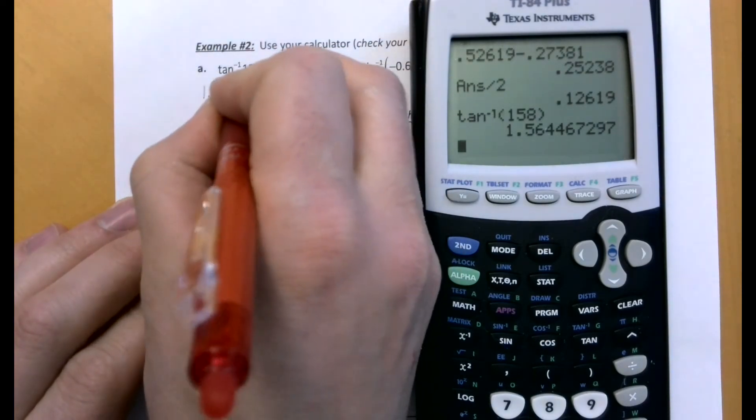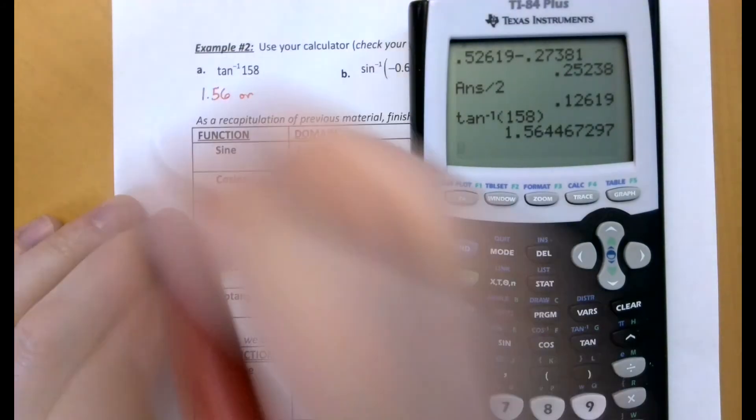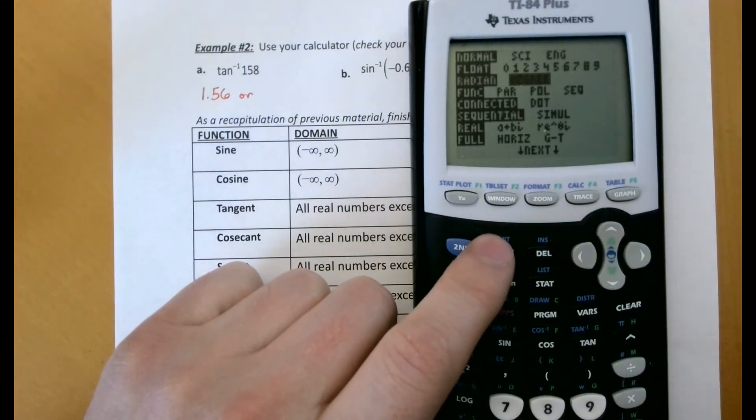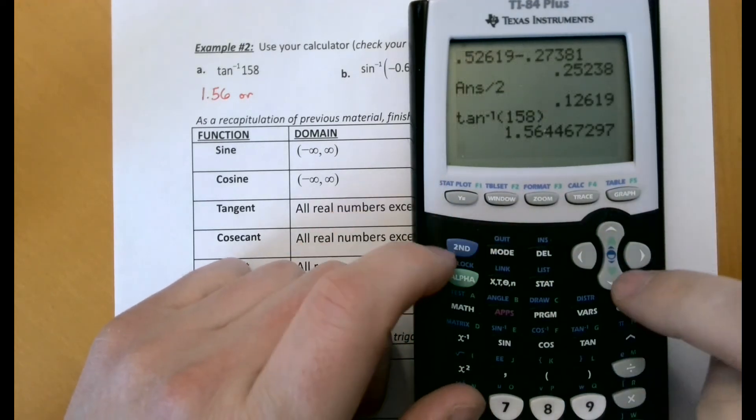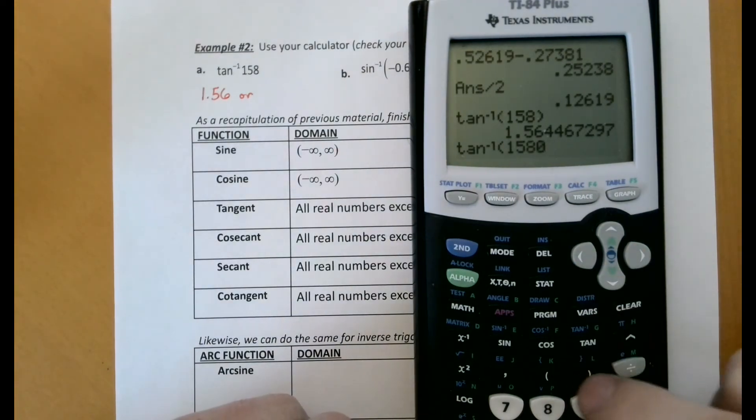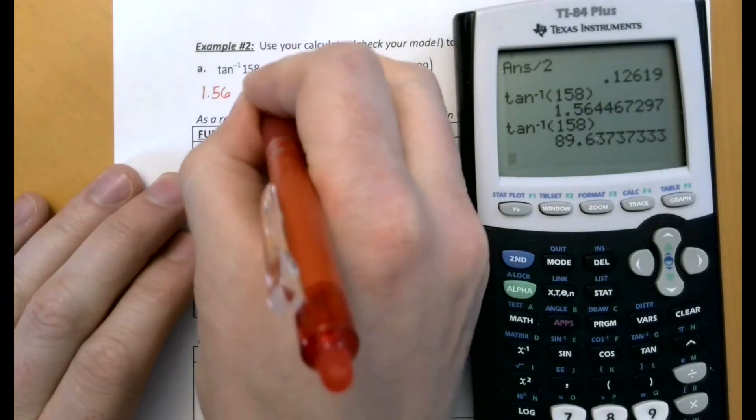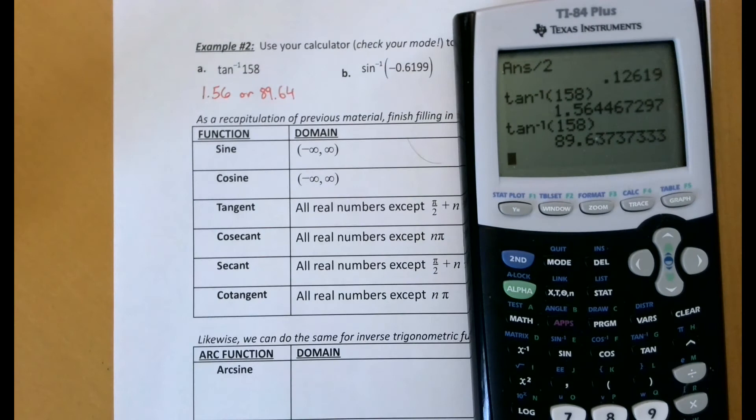Now recall, we don't need to write units on these things when they're radians, it's assumed radians if there are no units provided. Let me switch back and do this in degrees. Depending upon the problem you're working, you may want radians or degrees. So here's 158, and there it is in degrees. Now you could also have just converted these radians to degrees if you wanted to either way.